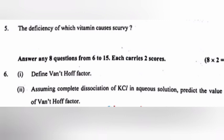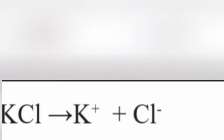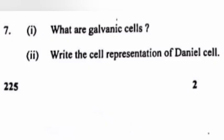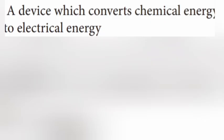Assuming complete dissociation of KCl in aqueous solution, predict the value of the Van't Hoff factor. Answer: KCl gives K⁺ + Cl⁻, so i = 2. Question 7 Part 1: What are galvanic cells? Answer: A device which converts chemical energy to electrical energy.